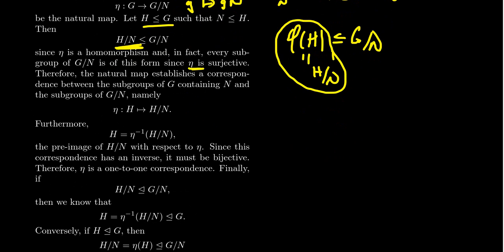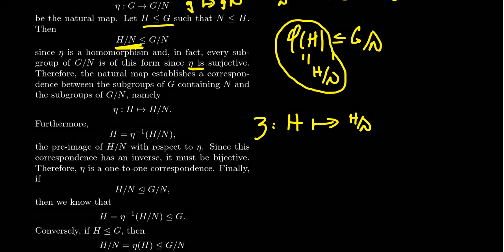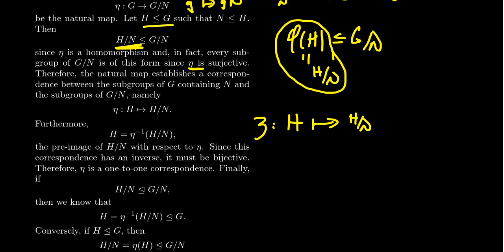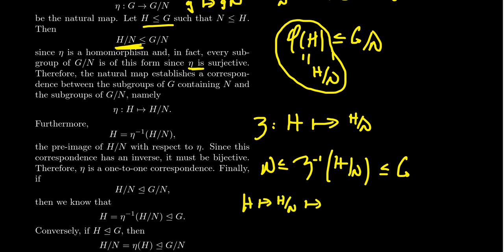Furthermore, we want to show this is a one-to-one correspondence. We can send H to H mod N — that's what η does — but is it actually a bijection? Let's establish an inverse function. H is the preimage of H mod N. We know that for a homomorphism, preimages of subgroups are subgroups, so the preimage of H mod N is a subgroup of G containing N, and H maps onto it. Composing in both orders returns us to H, so because this correspondence has an inverse, it is necessarily bijective — a one-to-one correspondence.